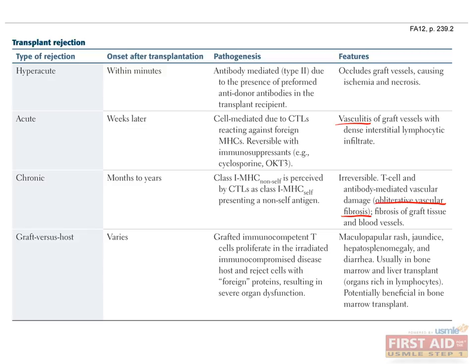Graft versus host disease is a condition in which grafted T cells proliferate in the immunocompromised host and reject host cells. The result is a condition characterized by maculopapular rash, jaundice, hepatosplenomegaly, and diarrhea.